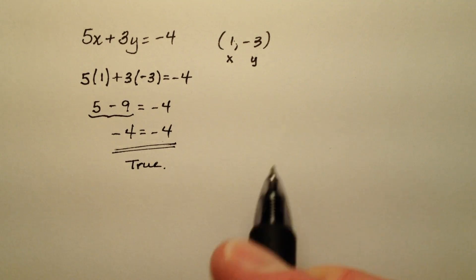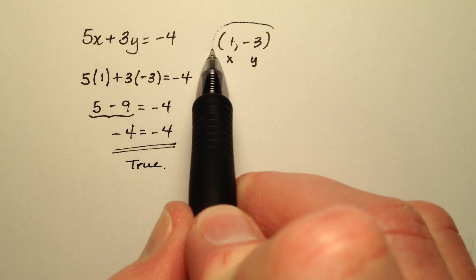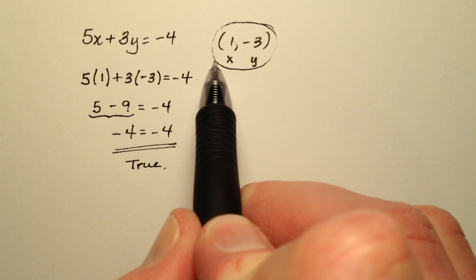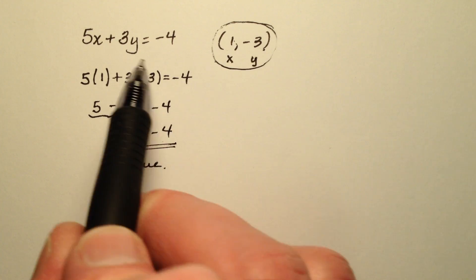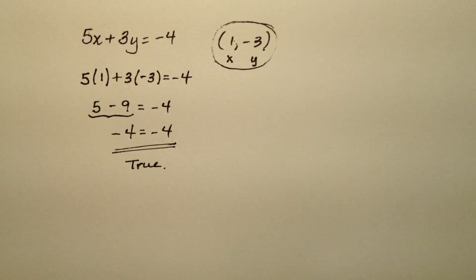This is a true statement, which indicates that the ordered pair (1, -3) is indeed a solution of this linear equation in two variables.